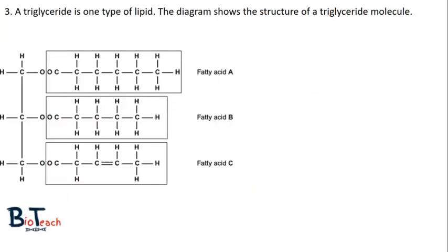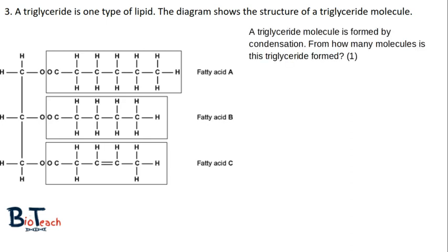Question three shows you an image of triglycerides. We can spot the glycerol group on the left, and we can also see the three fatty acids labeled as A, B, and C. The first part of the question asks from how many molecules this triglyceride is formed. We've got the glycerol molecule as number one, and then three fatty acids. So this particular answer is four.